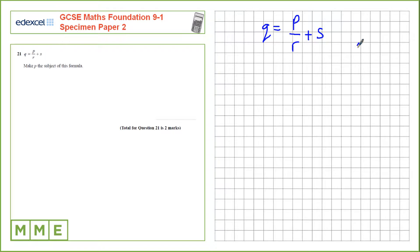Let's deal with this S first. The inverse operation of addition is subtraction, so we need to take S from both sides. On this side we'll be left with Q minus S, and we have P over R, add S, take away S, so those two will cancel out, which leaves us with P over R.